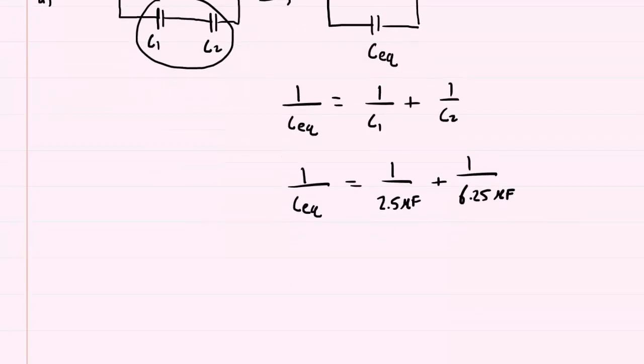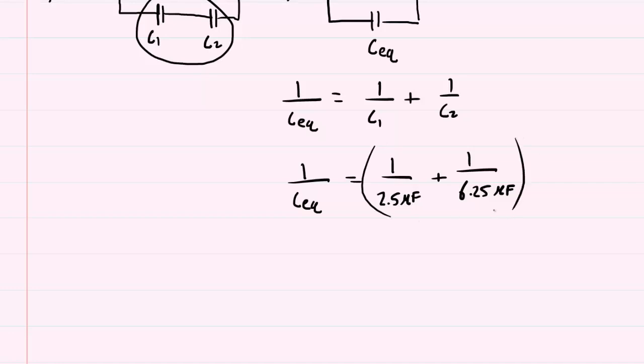I recommend picking up your calculator and entering that into it. So 1 divided by 2.5 plus 1 divided by 6.25 is 0.56.